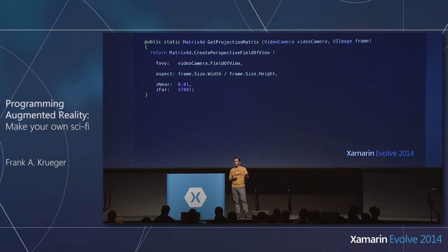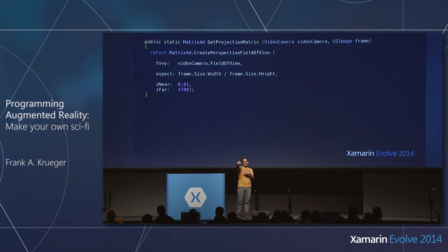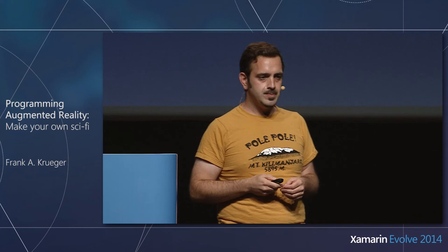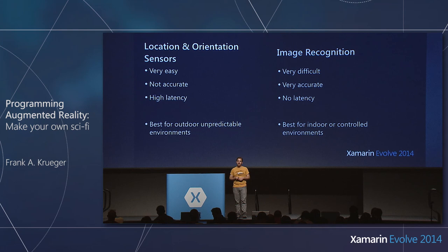I create a Matrix4D — the D means doubles, 64-bit math. I just have to give it the field of view and the aspect ratio, which is width over height. There are two other variables: how close can an object get to the camera, and how far. Assuming meters, I want to see objects as close as a centimeter and as far as 4.7 kilometers — that's generally the horizon for someone of my height. The projection matrix is simple; the real trick is the model view matrix, which integrates the location and orientation data.